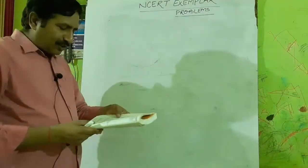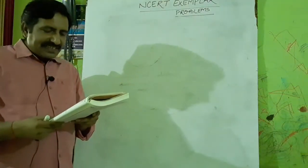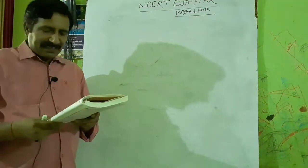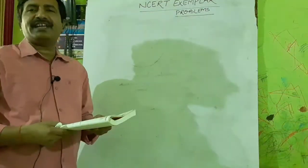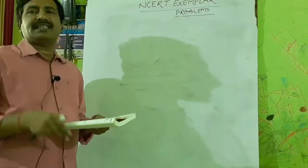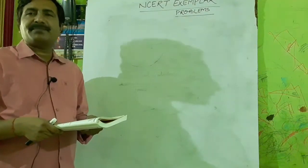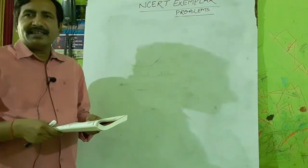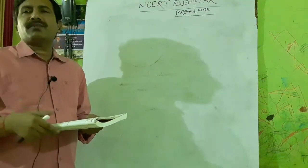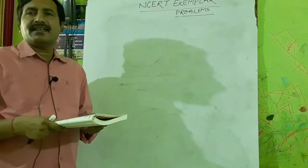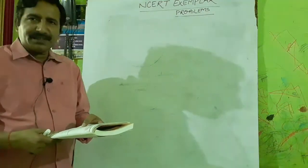Question seven: The area under a VT graph represents a physical quantity — what is its unit? The area under the velocity-time graph represents distance, and the unit of distance is meter. So the answer is meter.